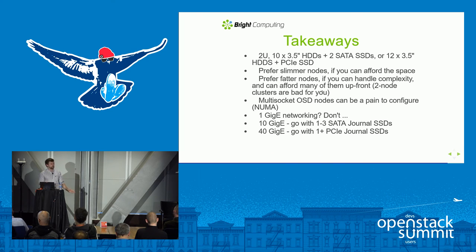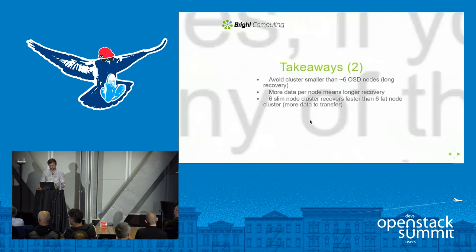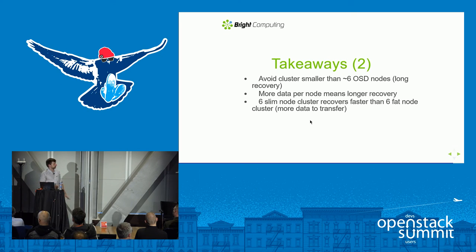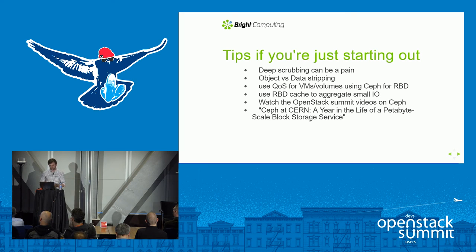If you have experience with Ceph, you might want to go with thicker nodes, which are better for optimizing overall storage cost at the expense of complexity. Avoid multi-socket motherboards for your OSD nodes. Start with at least 10 GbE networking unless it's a very small deployment. Avoid small clusters — with only about six OSD nodes, losing one means very long recovery. Also be mindful of deep scrubbing: it kicks in by default every week and you'll wonder why cluster performance drops.